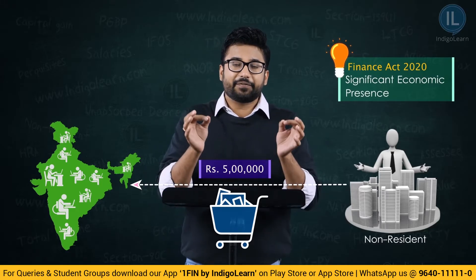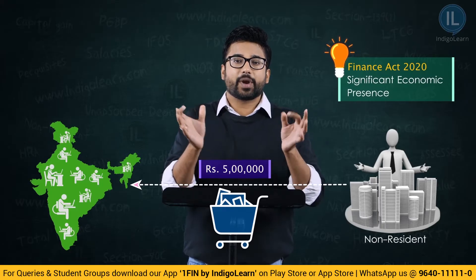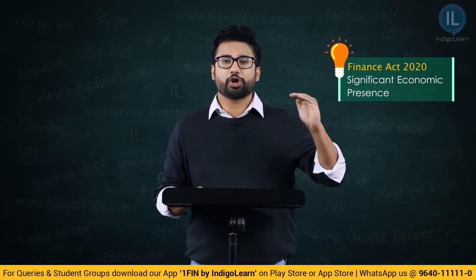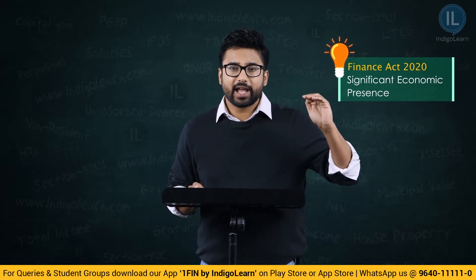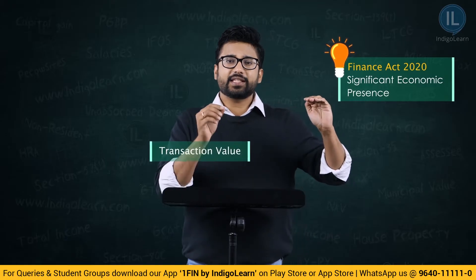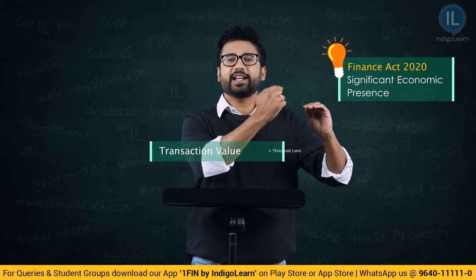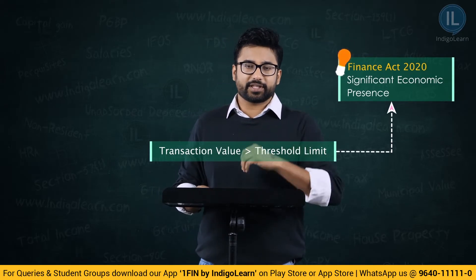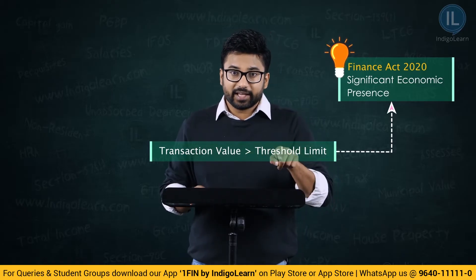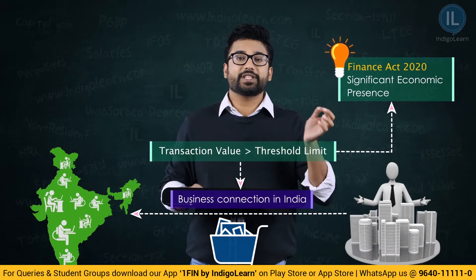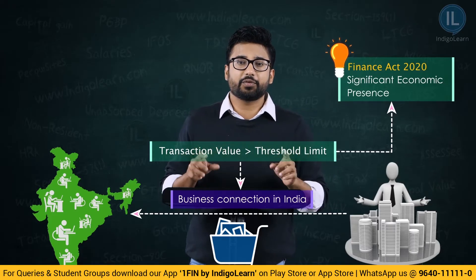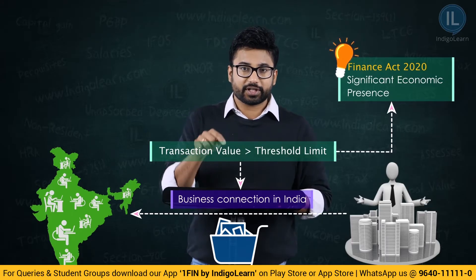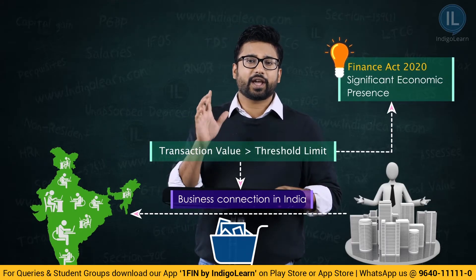Significant economic presence — what they have done is they said they will prescribe a threshold, and if the transaction value exceeds this threshold, then this will be treated as a significant economic presence. And thereby, this transaction will become a business connection, the so-called facilitation will become a business connection. And therefore, the income arising out of such a transaction will be treated as income accruing or arising in India.